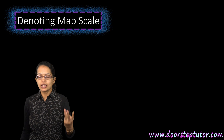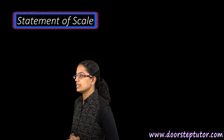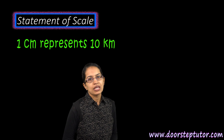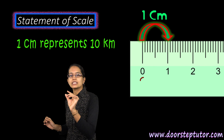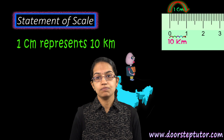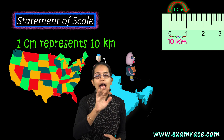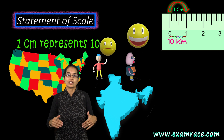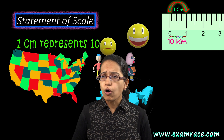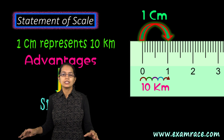Now talking about the three types of scales. The first is the statement of a scale, which is very simple. I simply say: one centimeter represents 10 kilometers. This statement is easy for people familiar with the metric system, but those familiar with the English system — who know miles and furlongs — won't understand it easily. That's one major drawback. One obvious advantage is that it's very simple to comprehend.